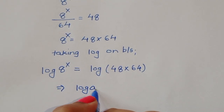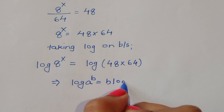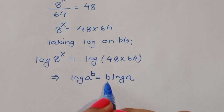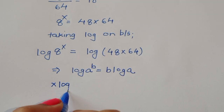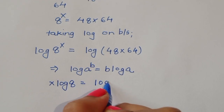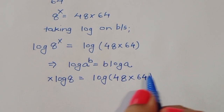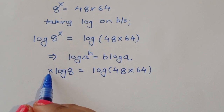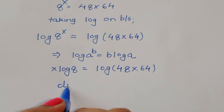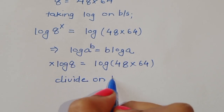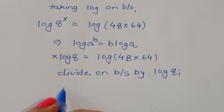Using this formula, log of a power b equals b log of a, we get x log of 8 is equal to log of 48 times 64. Now we have to cancel log 8 to find x, so we divide both sides by log 8.